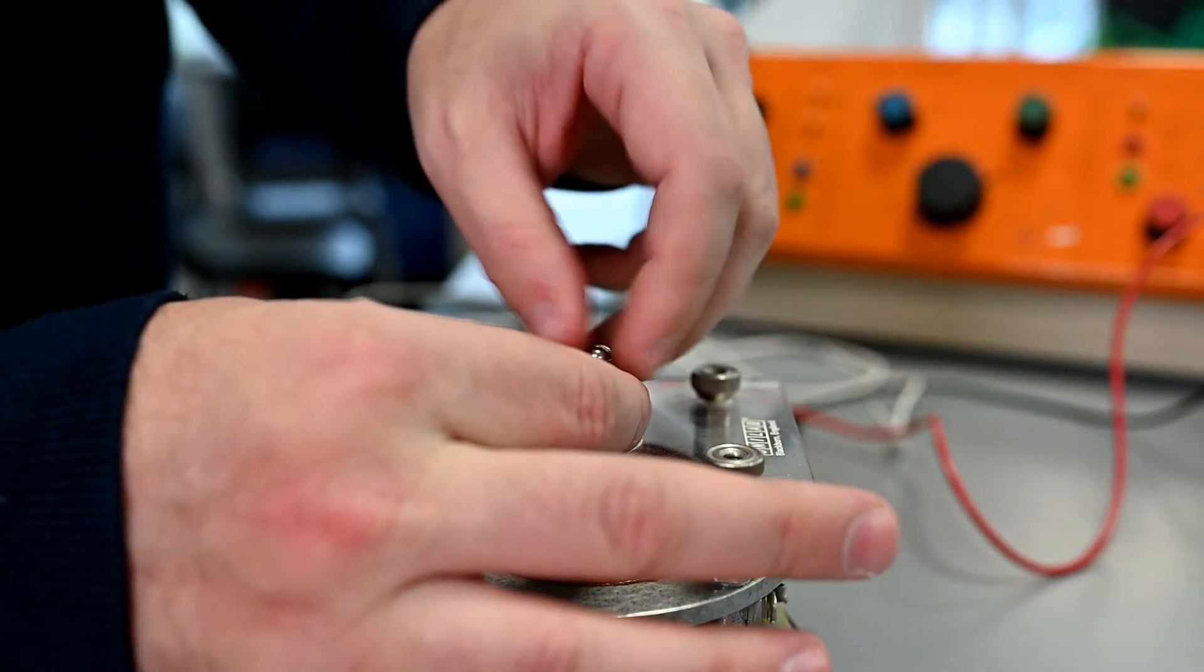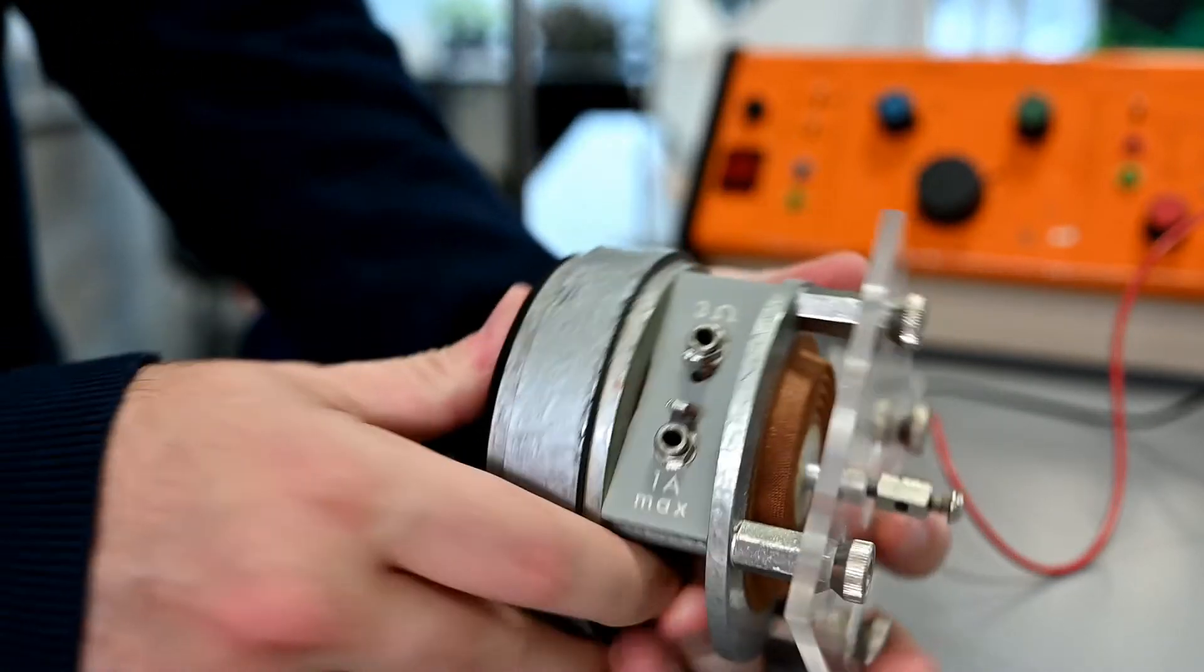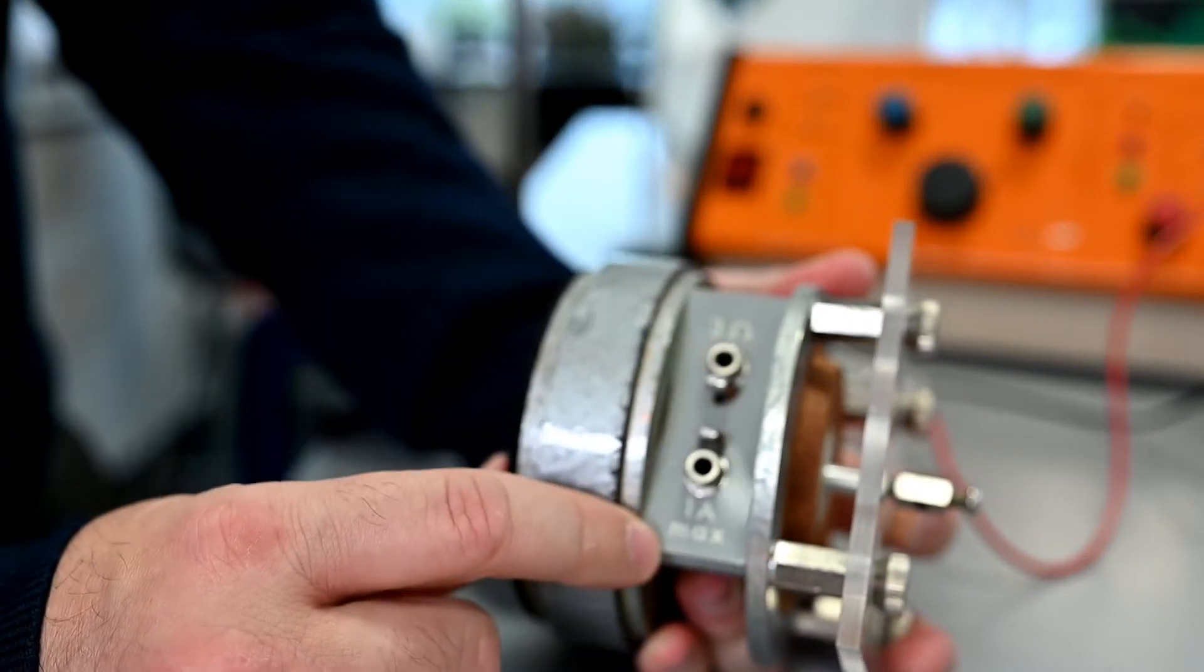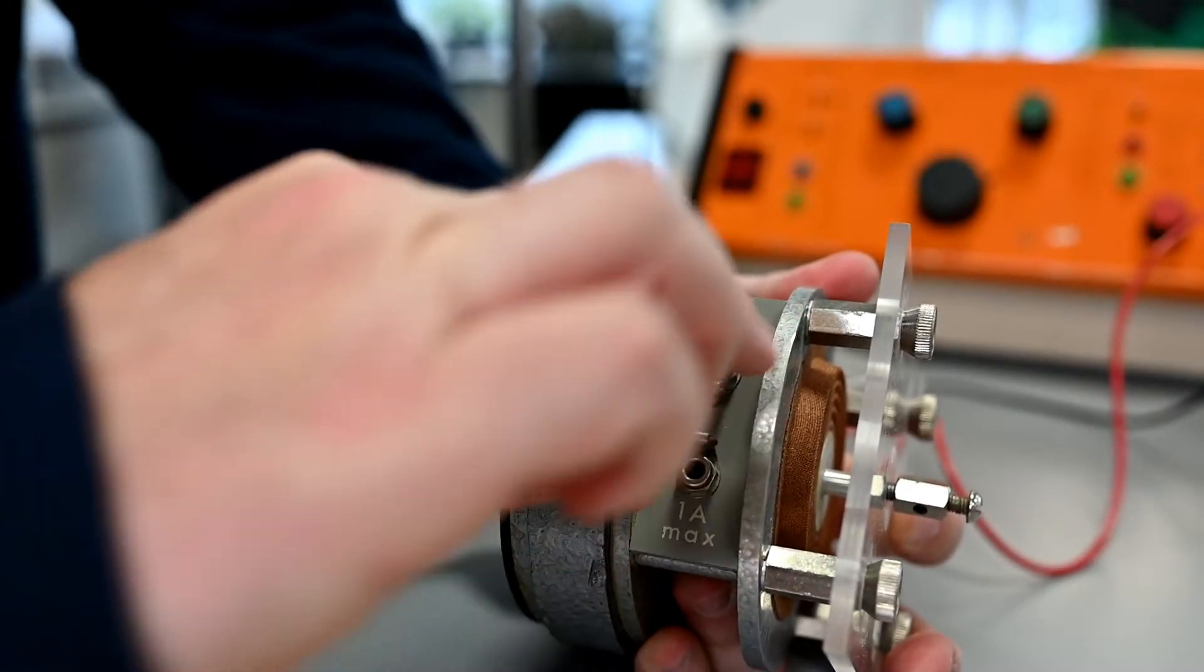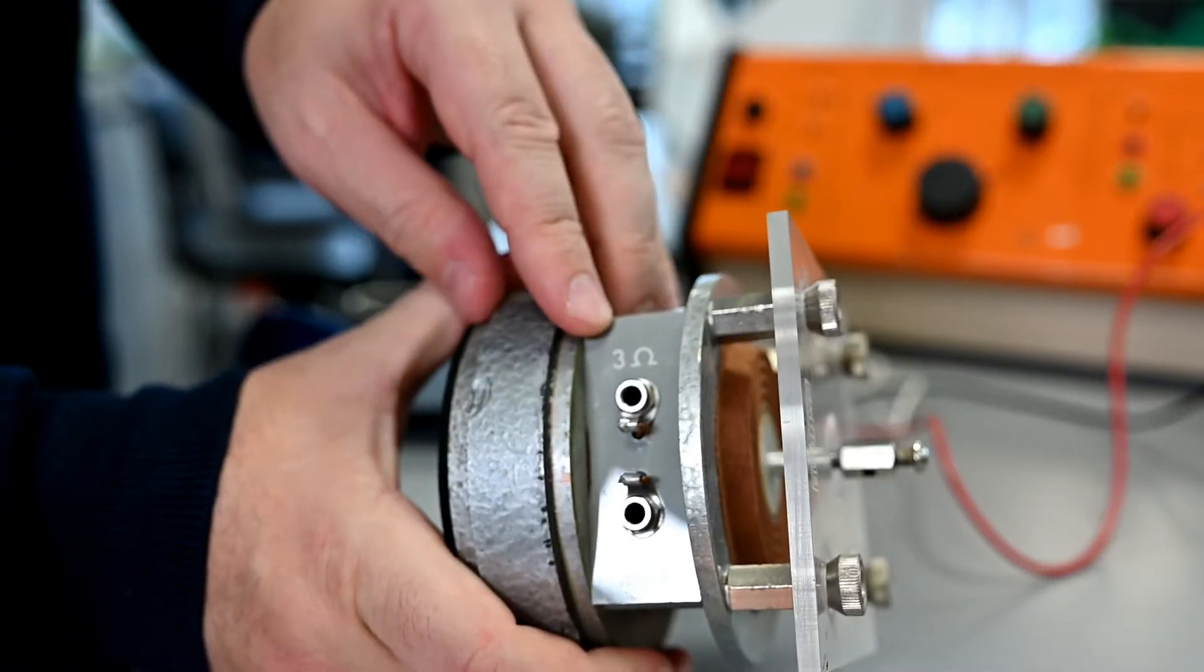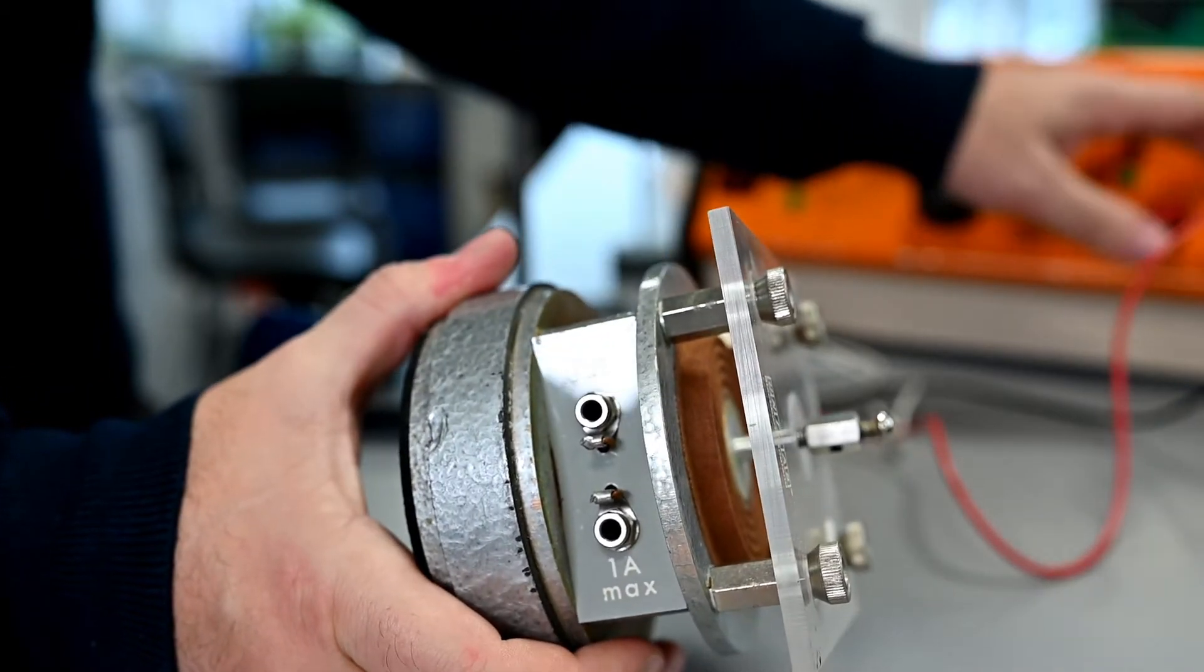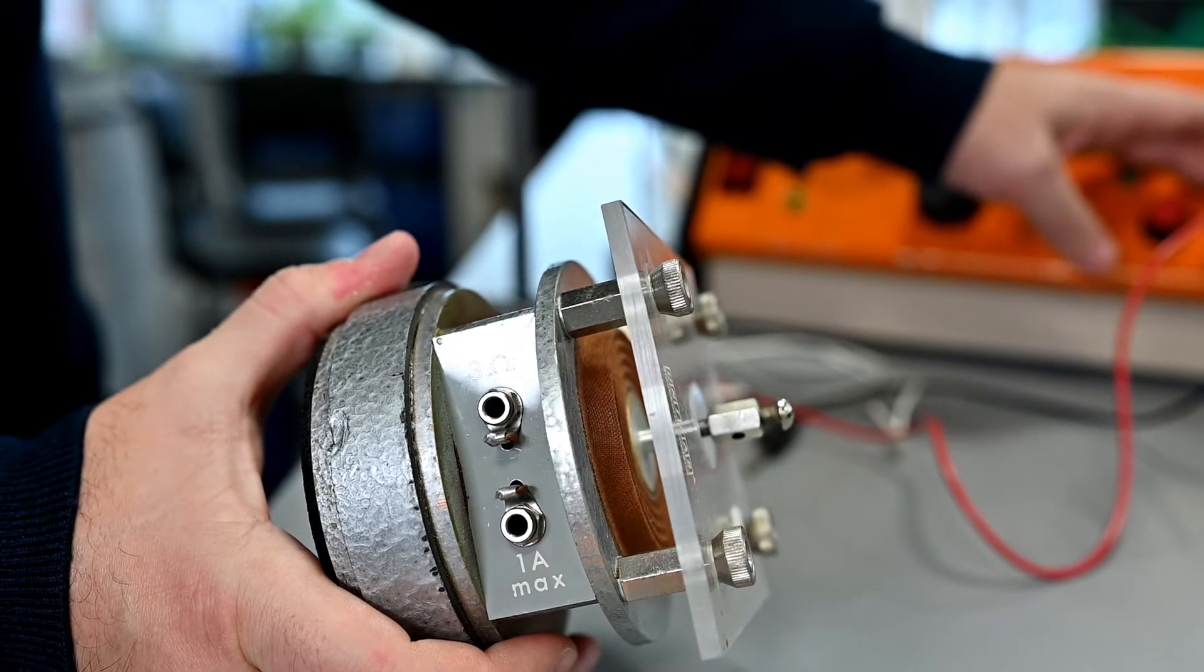The sockets on there—you can see it says three ohms, one amp max. There's no positive and negative, doesn't matter which way you connect wires. This three ohms is the impedance of this device, and it needs to be matched to the output impedance of the signal generator, which we talked about earlier.